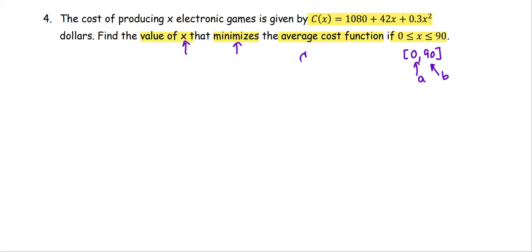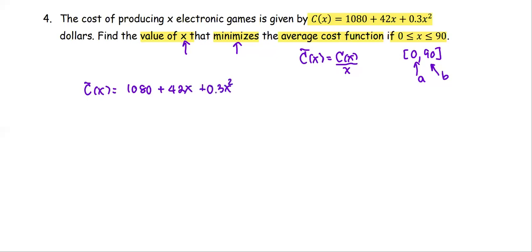Based on the average cost function C̄, how do we derive C̄? C̄ is the total cost C(x) divided by x, which is the number of items produced. We're going to minimize it — find the absolute minimum of the average cost function. We form C̄(x) = (1080 + 42x + 0.3x²) / x, which simplifies to 1080/x + 42 + 0.3x.